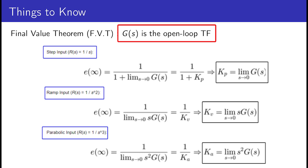KP, KV, and KA are the error constants: KP is called the position error constant, KV is the velocity error constant, and KA is the acceleration error constant. When you design the system, you must ensure you can achieve a specific error constant.